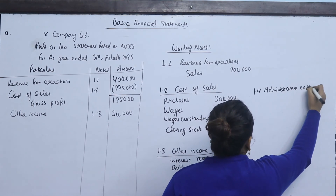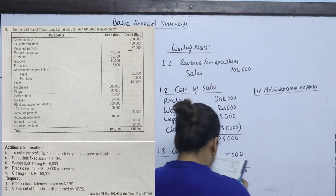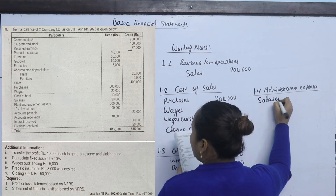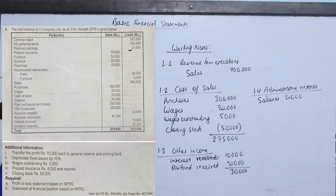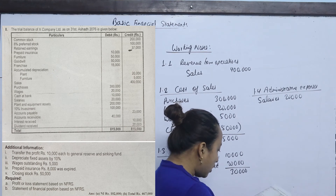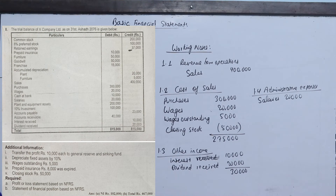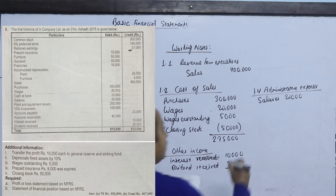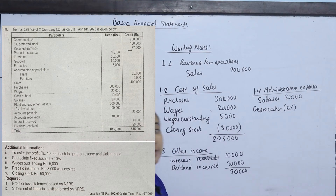Administrative Expenses include advertisement and salaries. Salaries from the trial balance are 20,000. Additional information is also considered. Depreciation is calculated at 10% on fixed assets. We transfer the depreciation amount to administrative expenses.